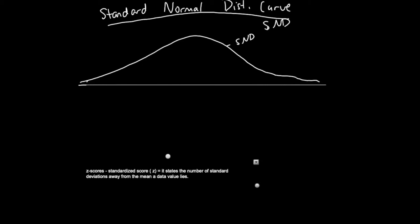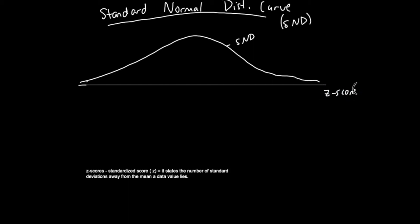Standardizing — how do I compare two normally distributed situations? I standardize them and put them all on the standard normal distribution curve, then I can compare things. SND represents standard normal distribution. The SND curve — why are these scores important? These standardized scores, represented by lowercase z, basically tell you the number of standard deviations away from the mean a data value lies. Z-scores are on the horizontal scale on an SND curve.